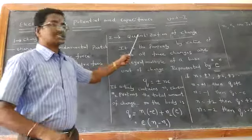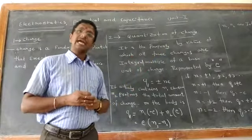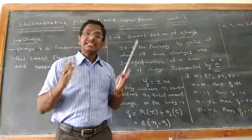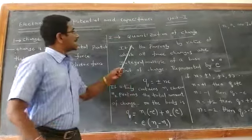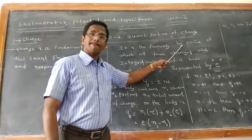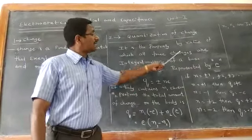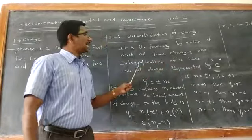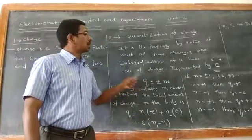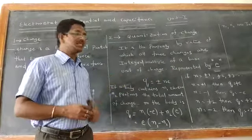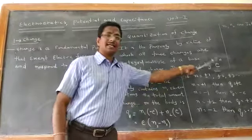Now, the second one is quantization of charge. The quantization of charge means it is an integral multiple of an electron. It is the property by virtue of which all free charges are integral multiples of a basic unit of charge, which is represented by E.